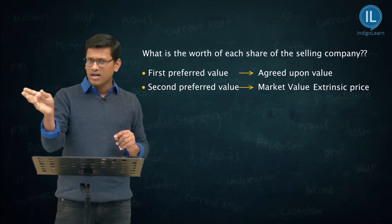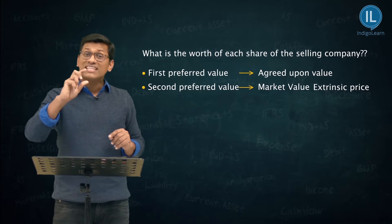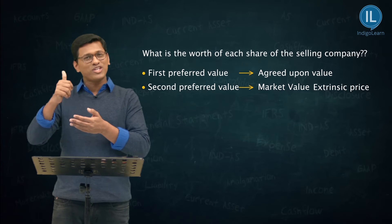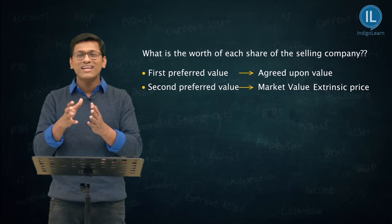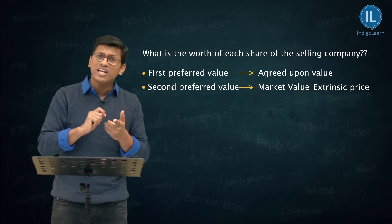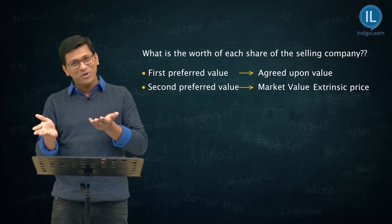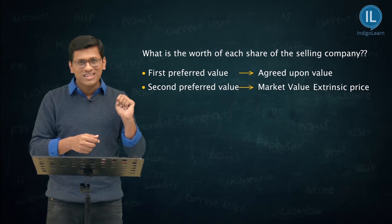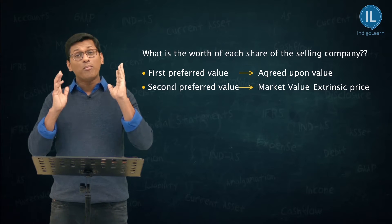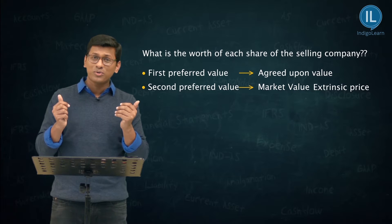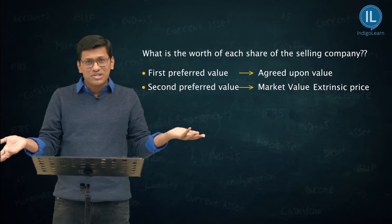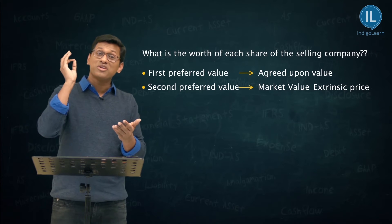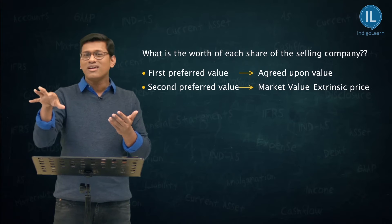This term extrinsic price — extrinsic value means external value — you keep seeing it in the study material and practice manual. First you search for the agreed upon value; you don't compute it, it should be given in the question. If agreed upon value is not there, you look for market value. Market value is also not computed — it must be given in the examination question, so you search and find it from the question paper.